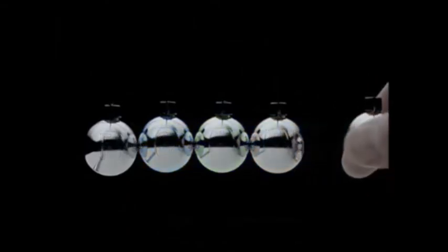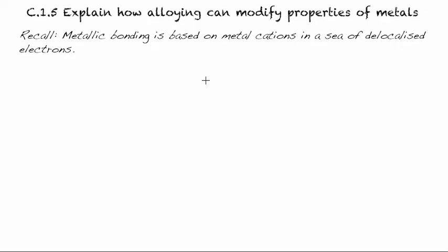Stainless steels: iron and chromium together with nickel, molybdenum and other alloying elements. Welcome to C.1.5. Today we're going to explain how alloying can modify the properties of metals.